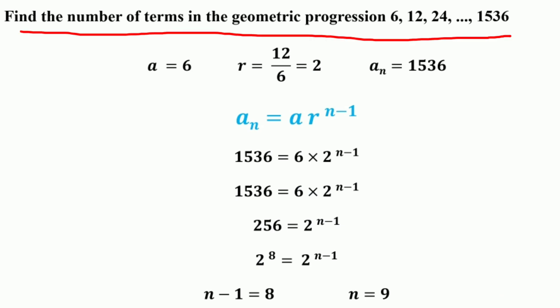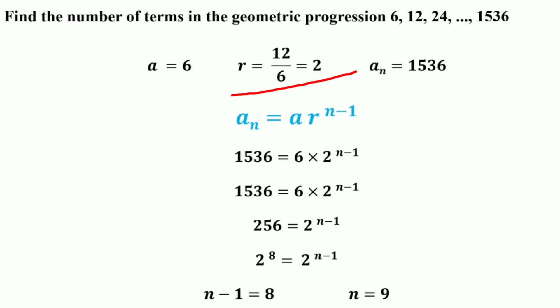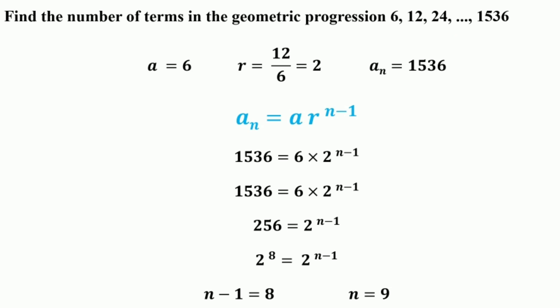Now we have another example: find the number of terms n in the geometric progression 6, 12, 24 up to 15,136. We want to find the value of n. The key terms given are: A1 equals 6, A2 equals 12, A3 equals 24, and AN equals 15,136. The first term A is 6, and the common ratio R equals A2 divided by A1, which is 12 divided by 6, equals 2. We apply the nth term formula AR^(n-1).